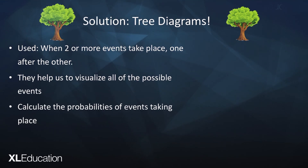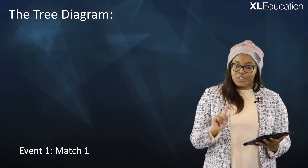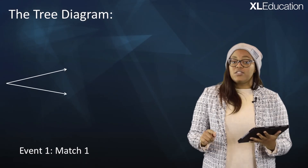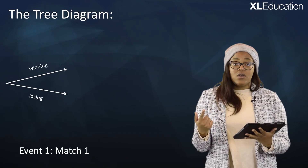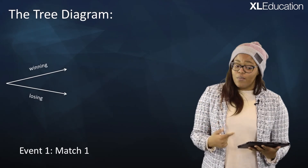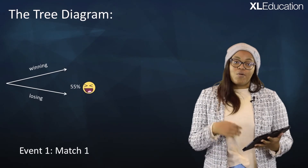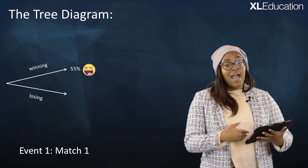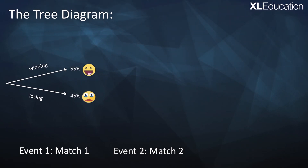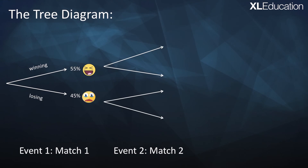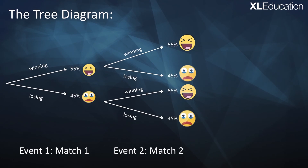Let's take a look at an example of a tree diagram in Amatle's situation. We'll look at event one, which is match one. We draw the branches of our tree diagram — each branch represents a particular outcome, in our case winning or losing. I like to draw my probabilities at the end of my tree diagram, so the probability of winning a match is 55 percent and of losing is 45 percent. In event two we have four possible outcomes, so I'll draw branches for each and write the probabilities at the end.